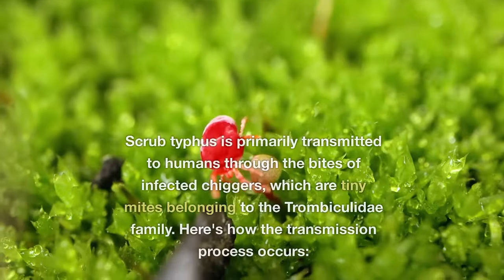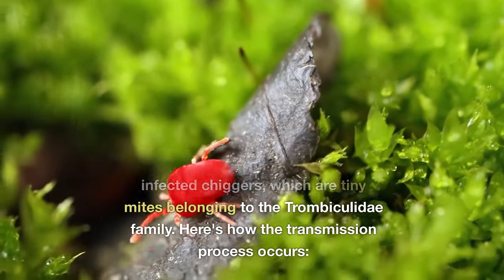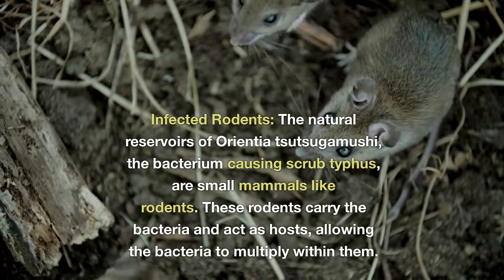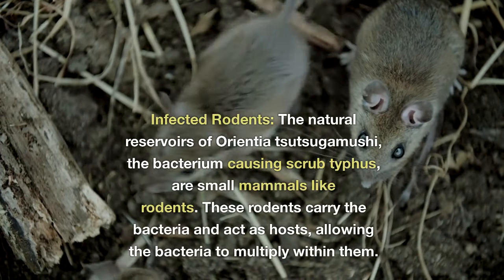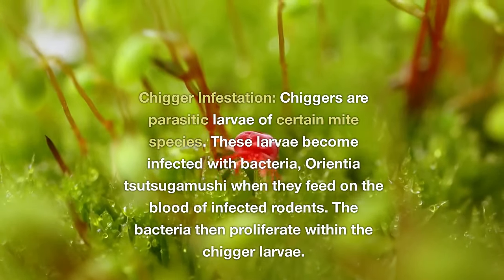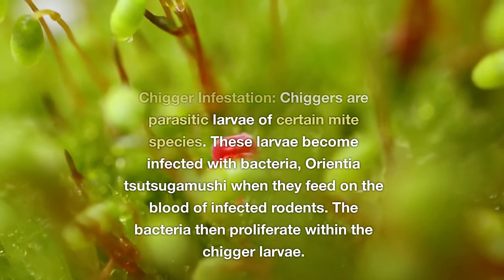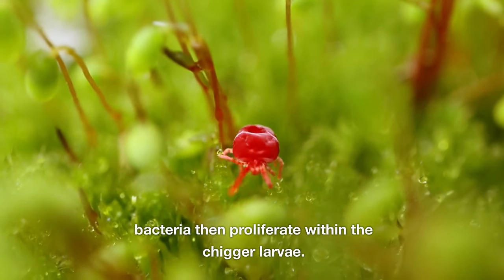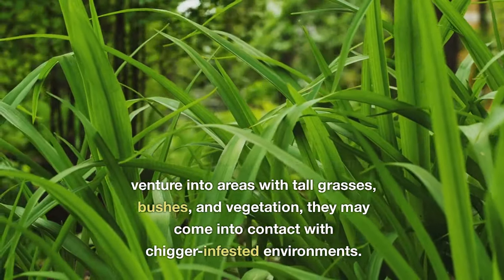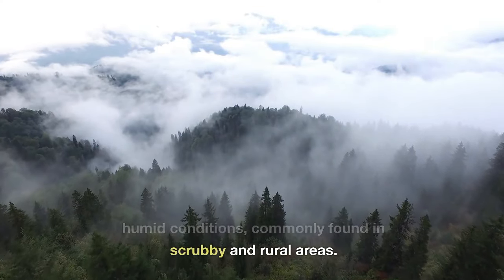Scrub typhus is primarily transmitted to humans through the bites of infected chiggers, which are tiny mites belonging to the trombiculid family. The natural reservoirs of Orientia tsutsugamushi are small mammals like rodents. These rodents carry the bacteria and act as hosts, allowing the bacteria to multiply within them. Chiggers are parasitic larvae of certain mite species. These larvae become infected with Orientia tsutsugamushi when they feed on the blood of infected rodents, and the bacteria then proliferate within the chigger larvae. When humans venture into areas with tall grasses, bushes, and vegetation, they may come into contact with chigger-infested environments. Chiggers are most active in warm and humid conditions, commonly found in scrubby and rural areas.